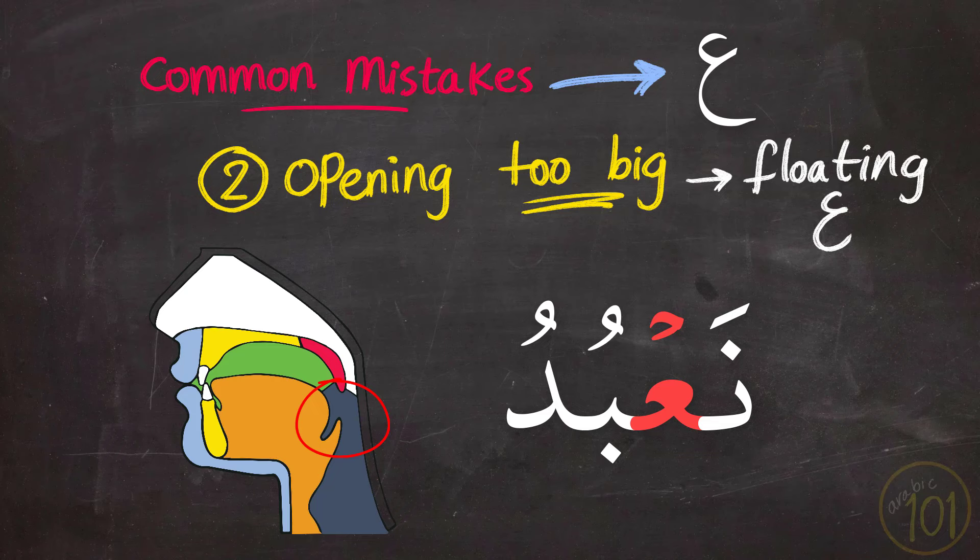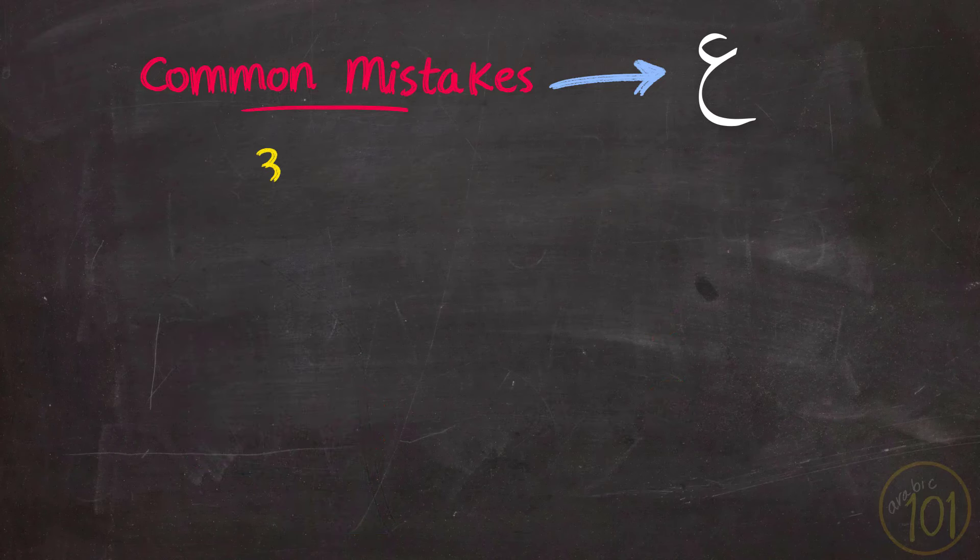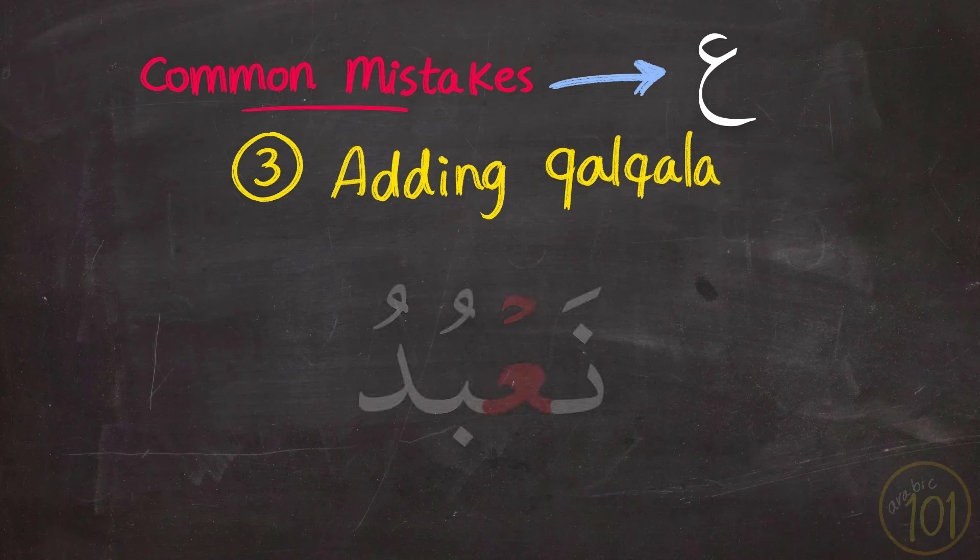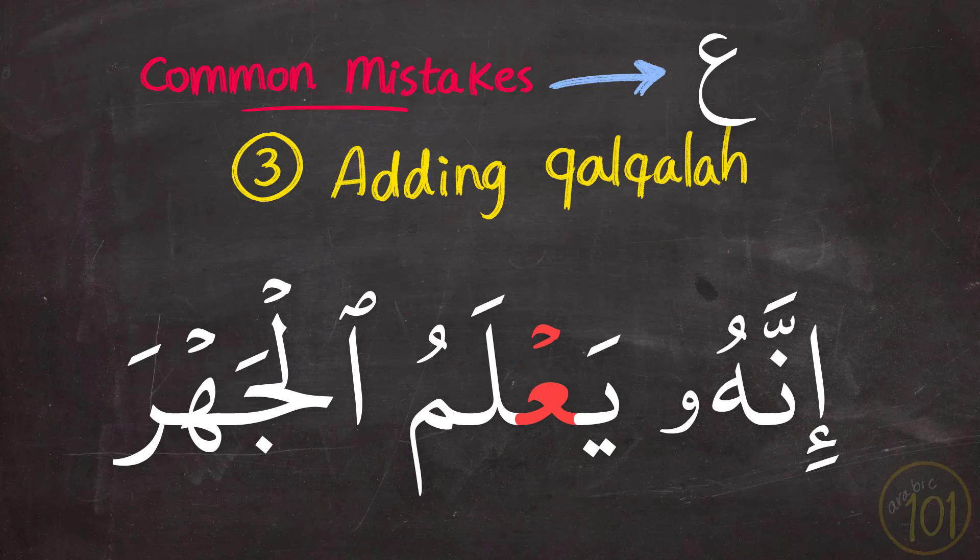These two mistakes are mostly made by beginners, but with more exercise, you can get there insha'Allah. Finally, adding Qalqala to Ayn with Sukoon, and it sounds like this. The Ayn is not a Qalqala letter. If it has Sukoon, then it is fully second, a pure consonant.